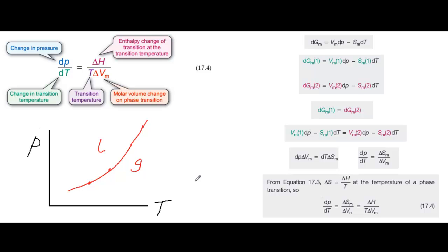But you can also create them from theory using equation 17.4, which is called the Clausius-Clapeyron equation. This equation is also useful for calculating the melting or boiling temperature at different pressures, as in worked example 17.2.